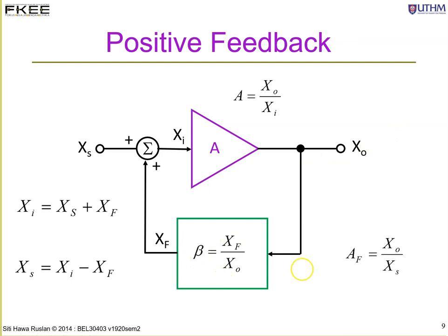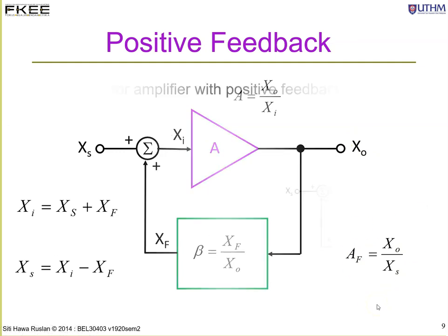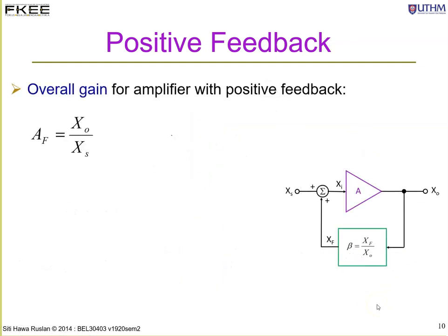With these relations, the overall gain for this positive feedback system is A_f, which equals x_out over x_s. We need to find what A_f is for this positive feedback system.